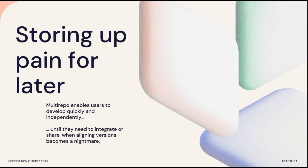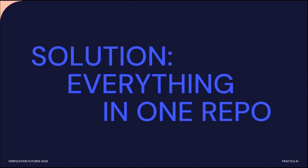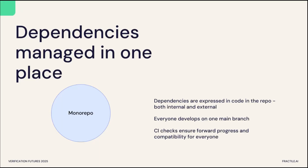This can all be summed up as storing up pain for later. Multi-repo gives your teams speed rather than velocity — everyone can develop with little inhibition until you end up trying to bring the code together. The solution is simple: stick it all in one repo. You manage all the dependencies in one place, both internal and external ones. You do pull requests to one shared branch and there's a CI that runs to make sure absolutely everything works together.